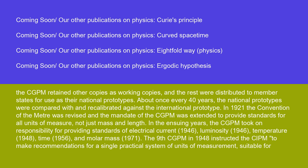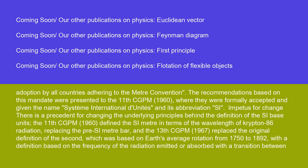In 1921, the Convention of the Meter was revised and the mandate of the CGPM was extended to provide standards for all units of measure, not just mass and length. In the ensuing years, the CGPM took on responsibility for providing standards of electrical current (1946), luminosity (1946), temperature (1948), time (1956), and molar mass (1971). The 9th CGPM in 1948 instructed the CIPM to make recommendations for a single practical system of units suitable for adoption by all countries. The recommendations were presented to the 11th CGPM in 1960, where they were formally accepted and given the name Système International d'Unités and its abbreviation SI.